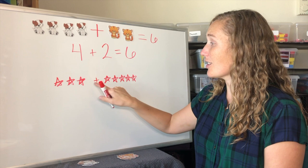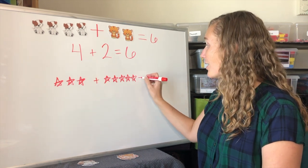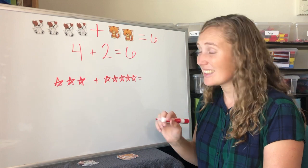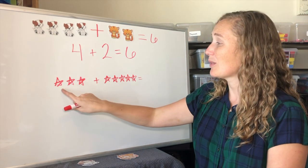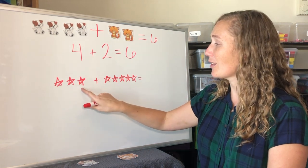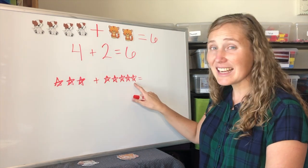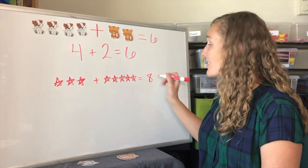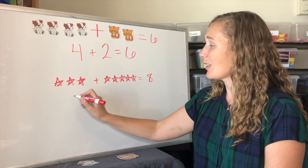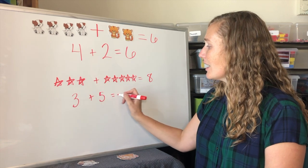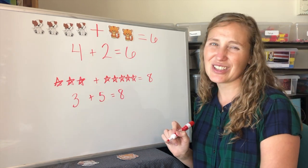Three stars plus five stars equals how many stars? Two, three, four, five, six, seven, eight. Eight stars all together. Three stars plus five stars equals eight stars.